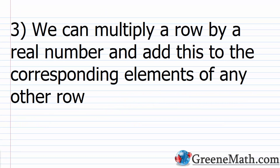The third row operation is a bit more challenging: we can multiply a row by a real number and add the result to the corresponding elements of any other row. This is legal because we're using the same basic principles as the elimination method.